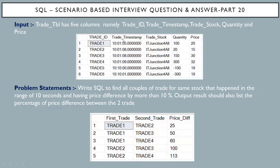The input trade table has four columns: trade ID, trade timestamp, trade stock, quantity, and price. The problem statement is: write a SQL query to find all couples of trades for the same stock that happened in the range of 10 seconds and having a price difference of more than 10 percent.